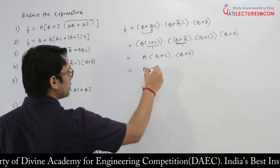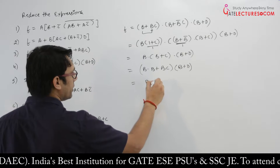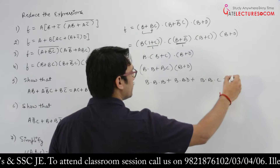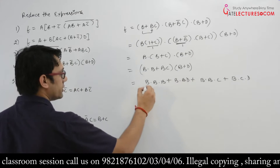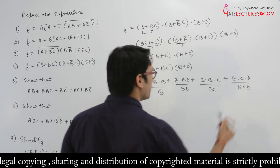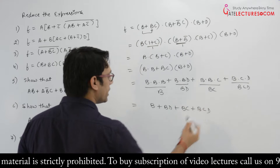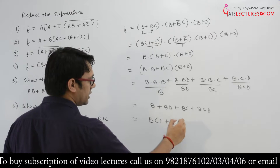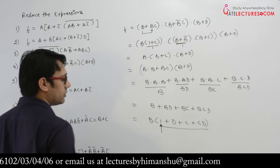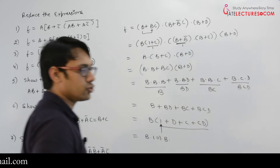Expanding further: b·b + b·d + b·c + b·c·d = b + bd + bc + bcd. Taking b as common between all terms: b(1 + d + c + cd). Since 1 is OR'd with the other terms, this equals b·1, which equals b itself. So this whole expression can be minimized to b.